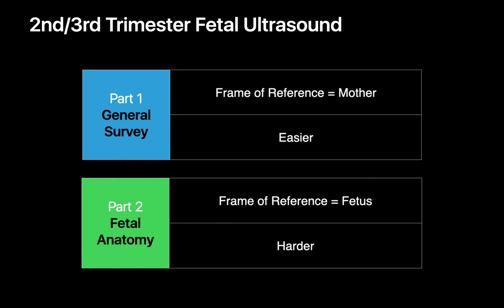The first half — the general survey — is easier to perform since our frame of reference is the maternal body. Not only does the mother do a better job of holding still, the orientation of the maternal anatomy is clear and fixed. Assessing fetal anatomy can be more challenging, as the orientation of the fetus will vary and the fetus can move and change position during the study.